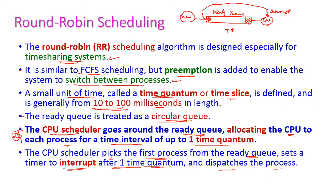Once a new process is created, it will be placed in the ready queue. The scheduler will select the first arriving process for execution, and execution is allowed only for the given time quantum. Once the time quantum is finished, an interrupt occurs — because this is a preemption scheduling algorithm. The current process goes back to the ready queue and is placed at the tail. Then the second process will be selected for execution. This is called the round robin scheduling algorithm.